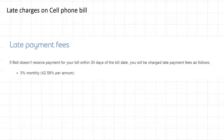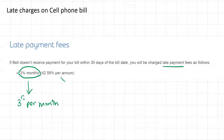Interest isn't just something you pay for mortgages and cars — you can also see it on bills when you don't pay them on time. Here is a Bell fee statement: if you don't pay your bill within 30 days of the bill date, you will be charged a late payment fee of three percent per month. It also works out to four point two five eight percent per annum, which is the same as per year.